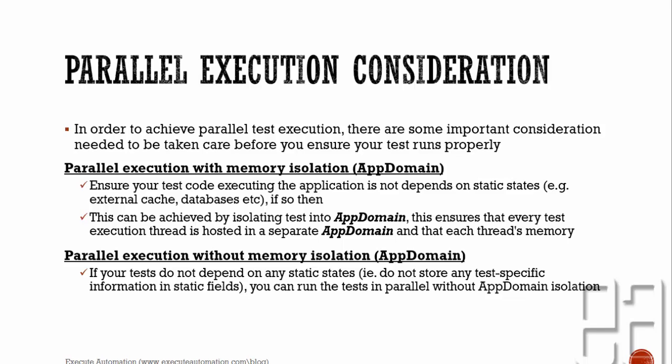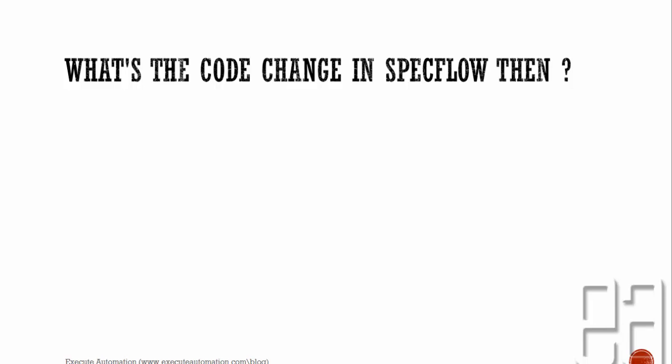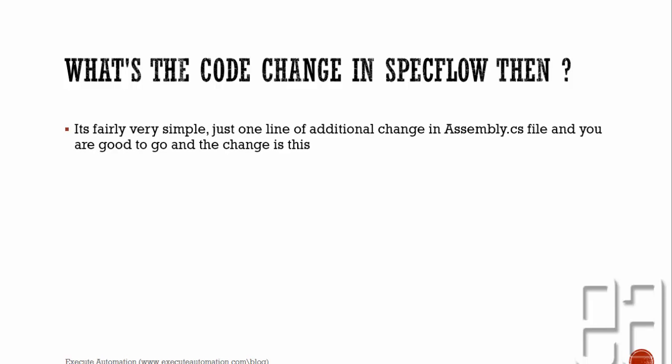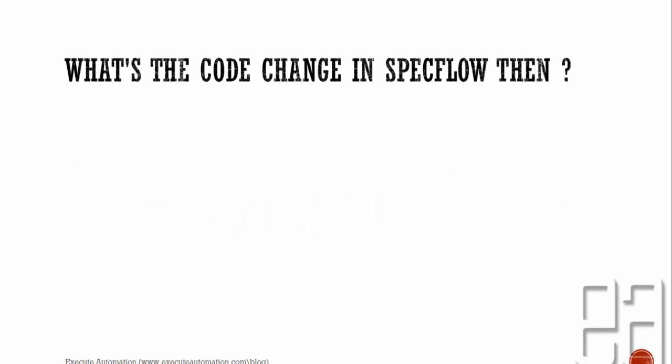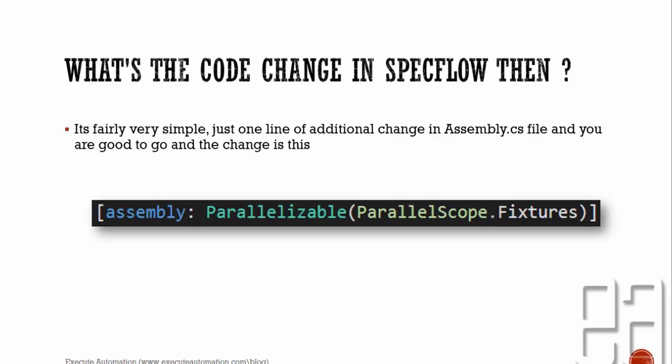In order to perform these two operations, the code change needed in SpecFlow is fairly simple — just one additional line of change in the assembly.cs file and you are good to go. The only change you need to make is to add an assembly-level Parallelizable attribute. As already discussed in the SpecFlow with Selenium C# video series, we covered the Parallelizable attribute of NUnit in greater detail in parts 13 and 14, and this is exactly the same thing needed for SpecFlow.